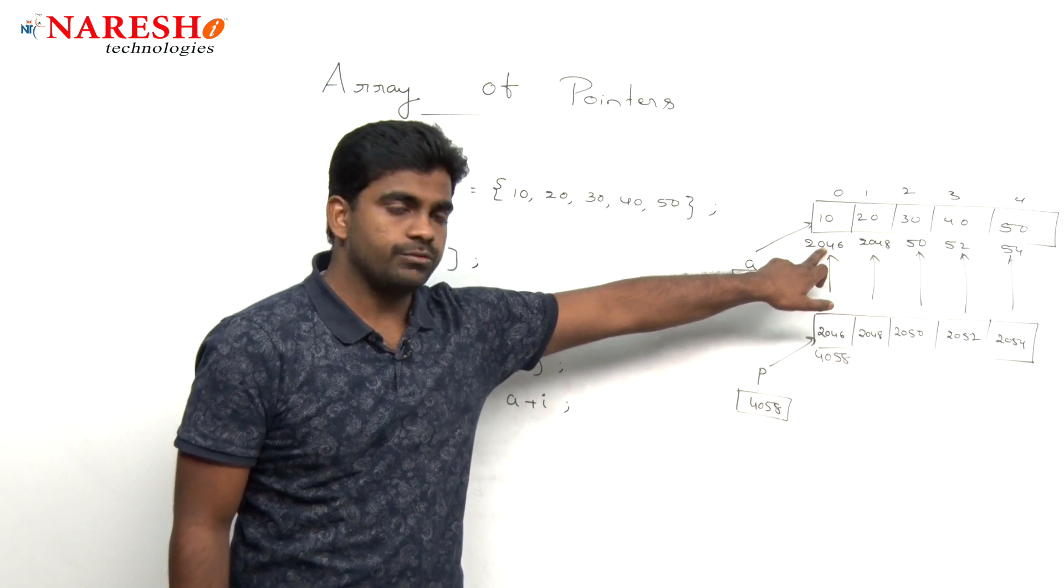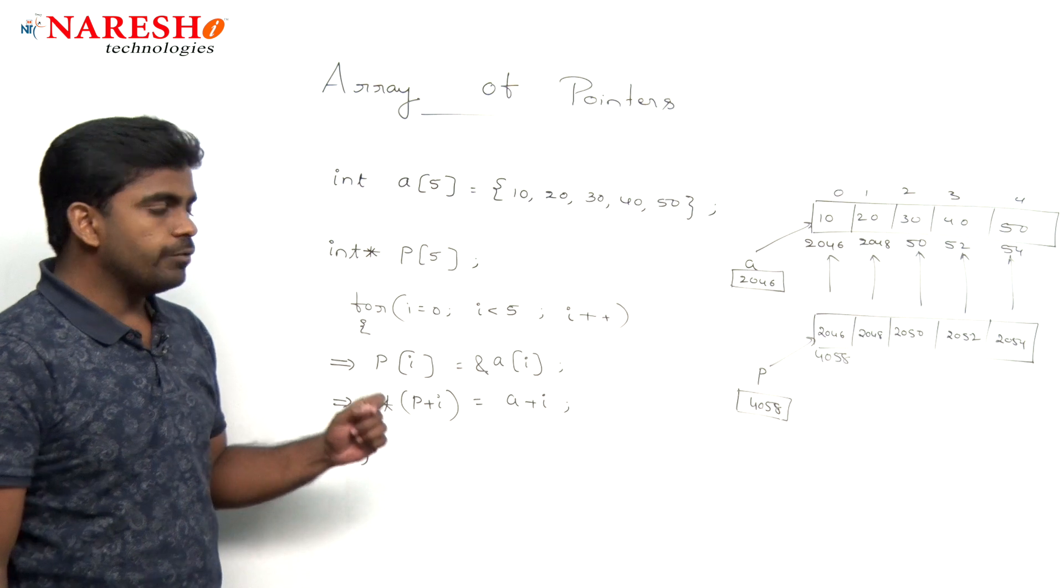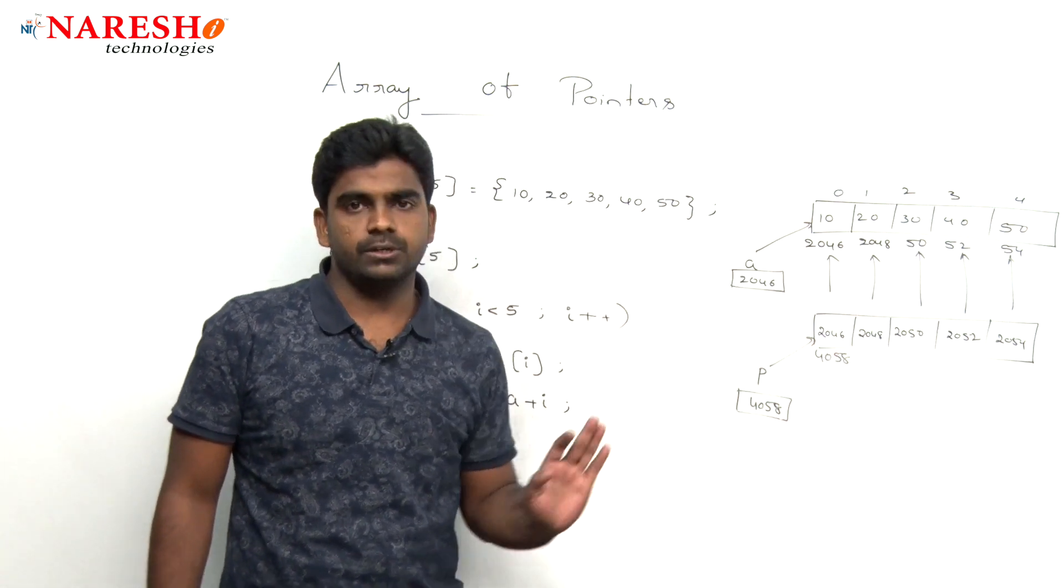So, this 2046 will come and store into this location. So, this is how we are creating that array of pointers, how to store that references into those locations.